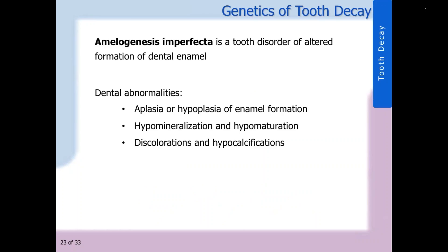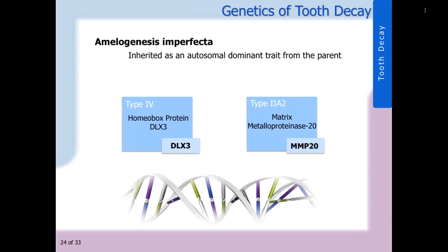Amelogenesis imperfecta is a tooth disorder of altered formation of dental enamel. Dental abnormalities due to this pathology include complete absence, or aplasia, or partial absence, known as hypoplasia, of enamel formation, as well as hypomineralization, hypomaturation, discoloration, and hypocalcification. Amelogenesis imperfecta is an autosomal dominant disease, so a child has at least a 50% chance of obtaining the disease if a parent has the gene. The types are classified through the dental abnormalities present in their inheritance pattern, so varying types are associated with specific genes. Type 4, which results in taurodontism, is associated with the DLX3 gene. Type 2a results in hypomaturation and involves the MMP20 gene, which codes for matrix metalloproteinase 20.